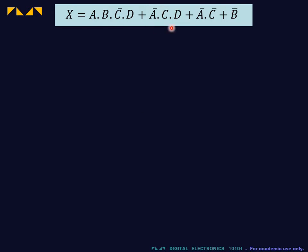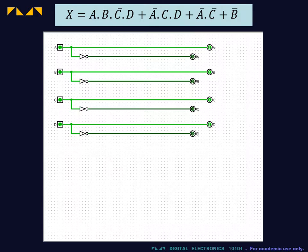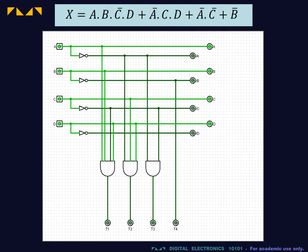We will implement the circuit for this expression. For the circuit, the first step is to lay out the four inputs along with their inverses. Then we create the product terms using AND gates.